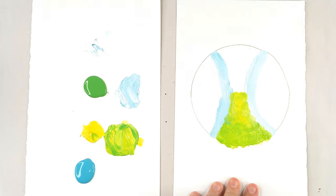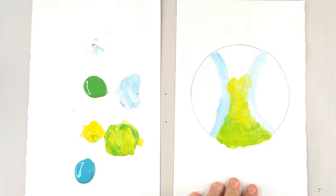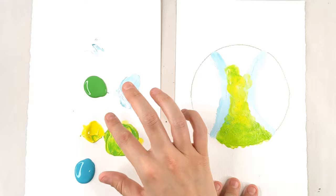You might want to just use more yellow than your green, because you're going to naturally make a little bit of green covering up that blue. So we're just tapping in, and this is going to give that fuzziness of a tennis ball.